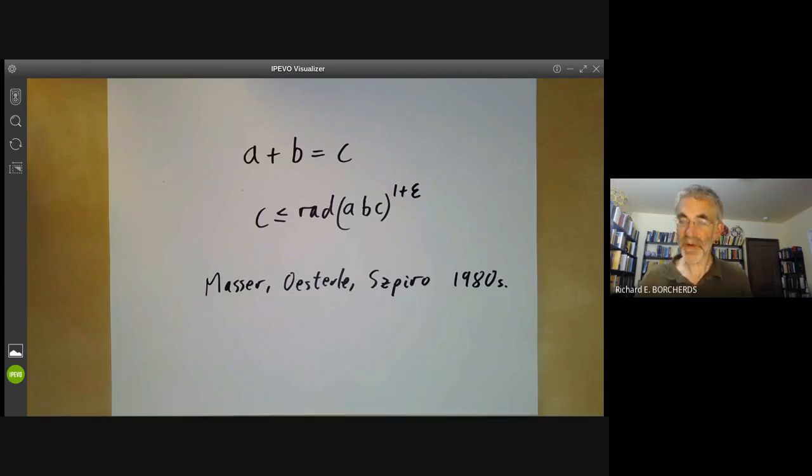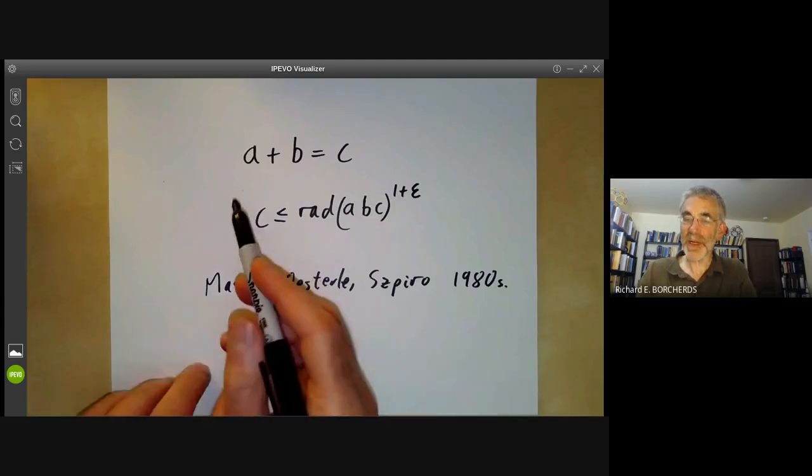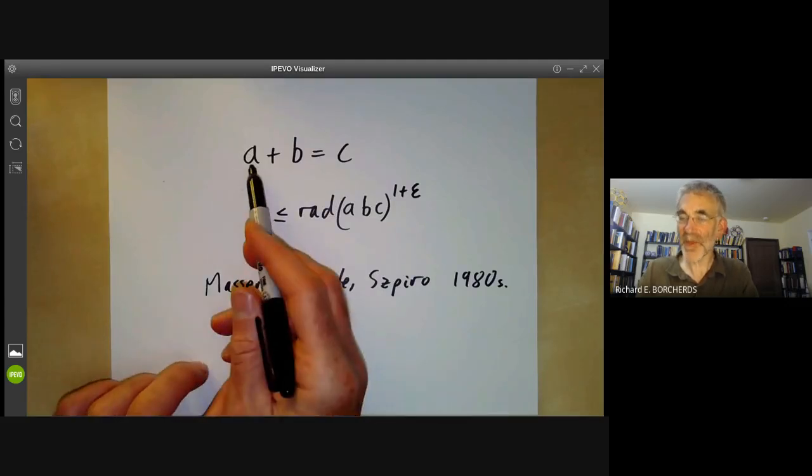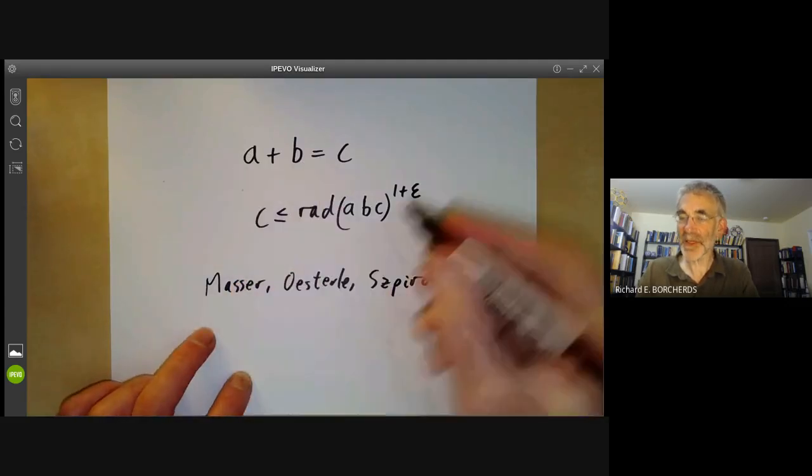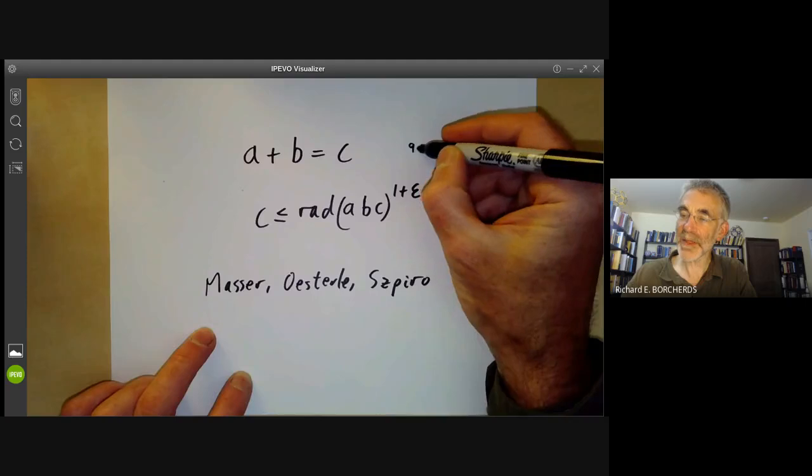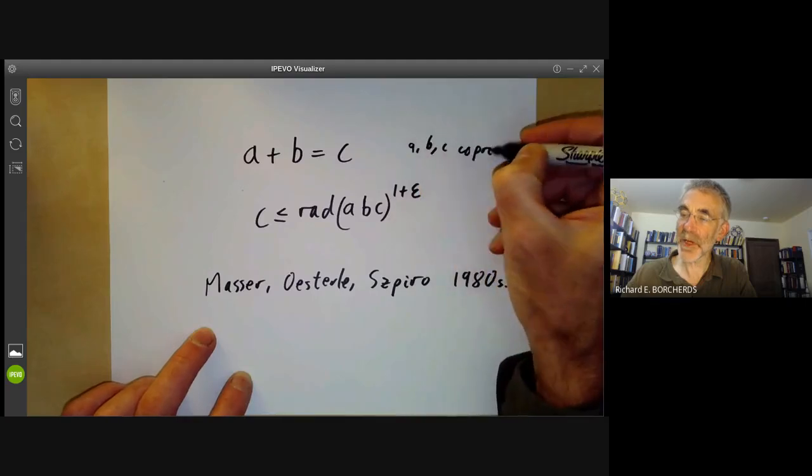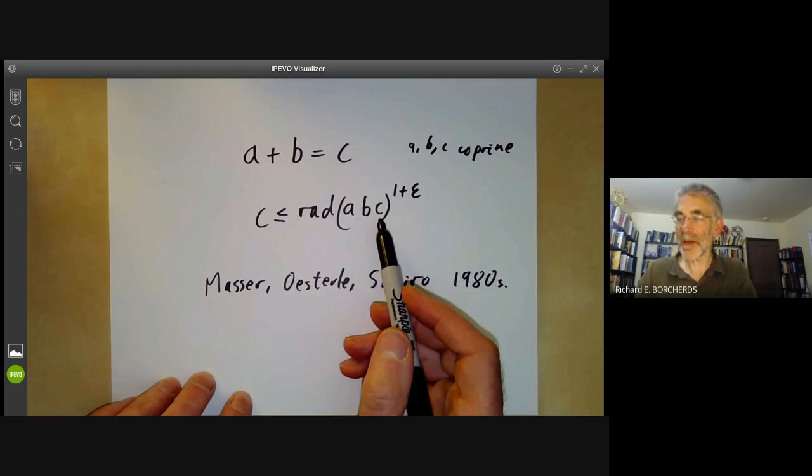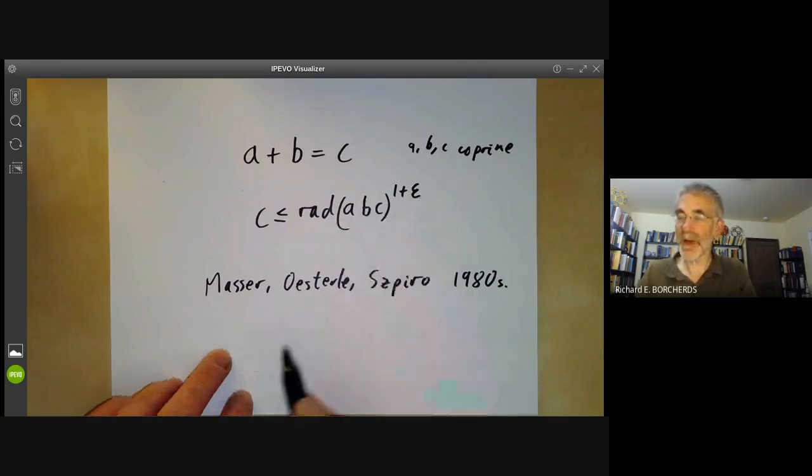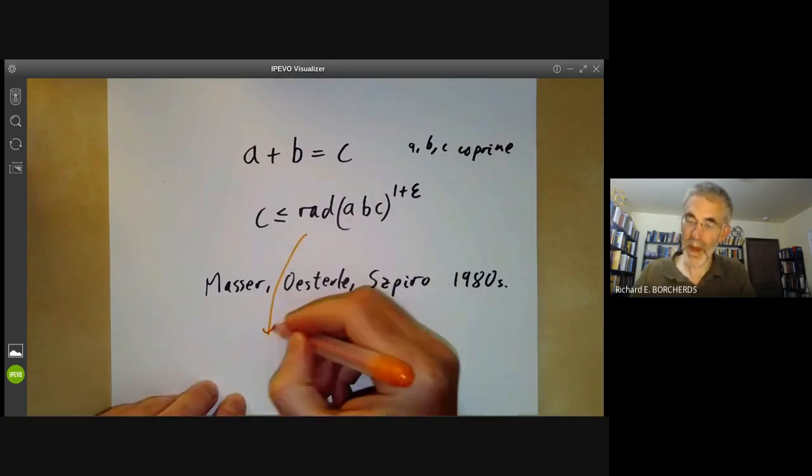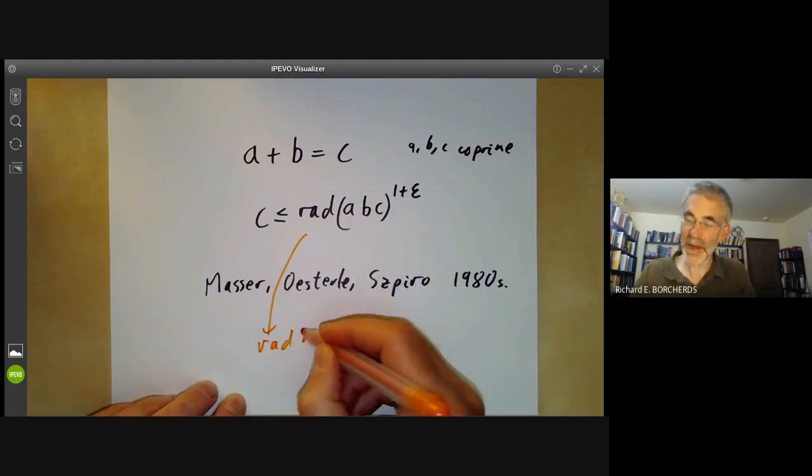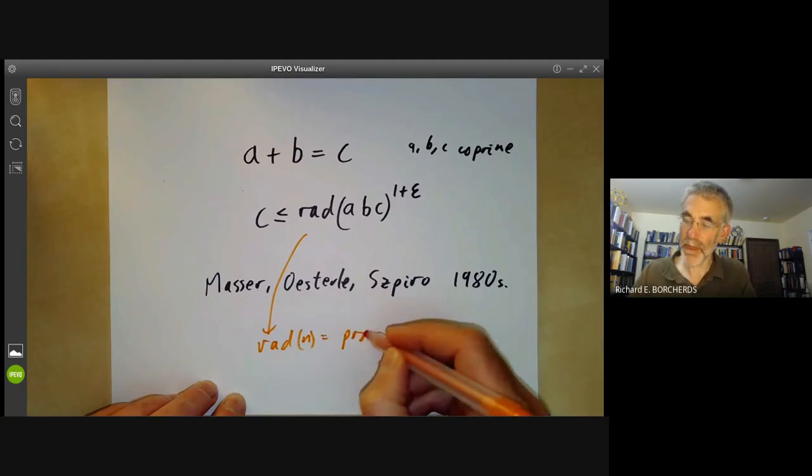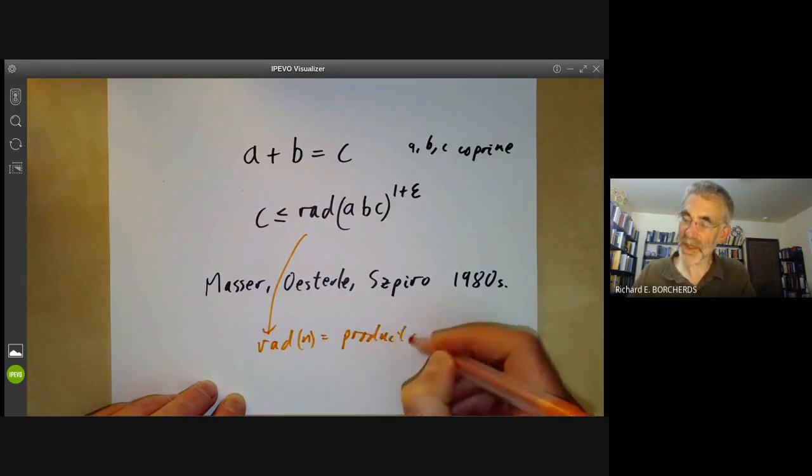So first of all what the ABC conjecture is, it says if you have integers A, B and C with A plus B equals C and here A, B and C should be co-prime, then C is at most the radical of ABC with a small fudge factor here. So what is the radical? Well the radical of an integer n is the product of the distinct prime factors.